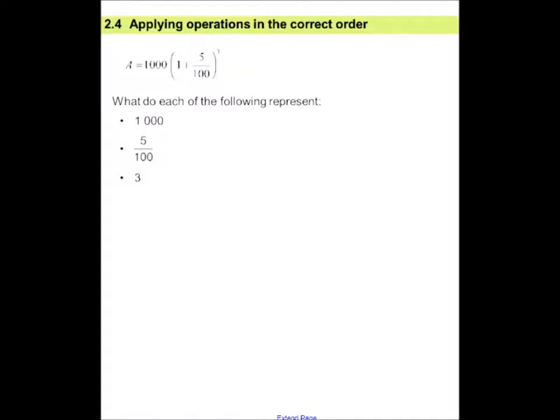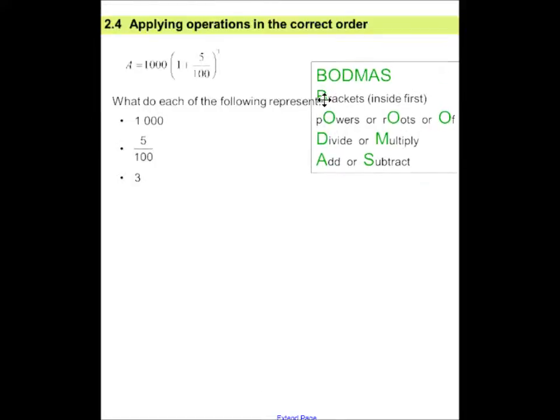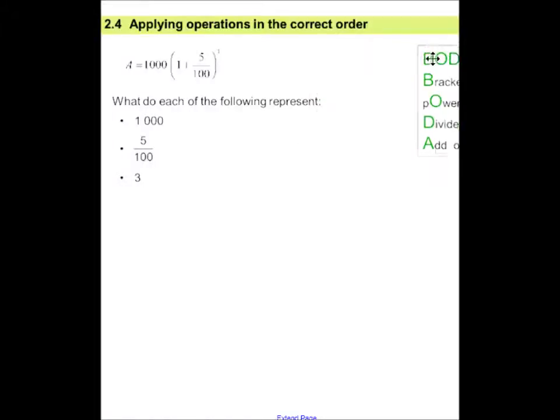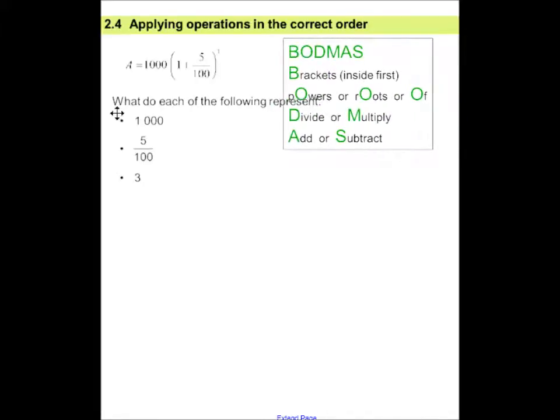Applying operations in the correct order. We all know about BODMAS. Brackets, powers, roots or of, divide or multiply in order from left to right, add and subtract in order from left to right. But in this example, we're looking at, you can see brackets have already been inserted for you. Let's just first have a look what each of the following represents. From grade 9, you would remember that this was a compound interest formula. That was your principal amount. The amount you started with was 1,000 rand in this case. The 5 over 100 is the fraction. That was the interest rate and 3 was to the power of 3. Now, we're not looking at formulas. We're just going to look at how we would go about solving this problem.